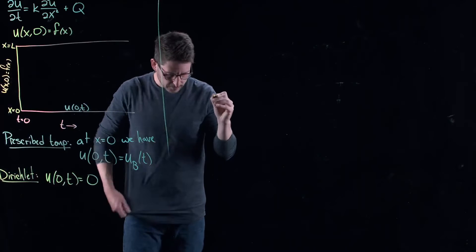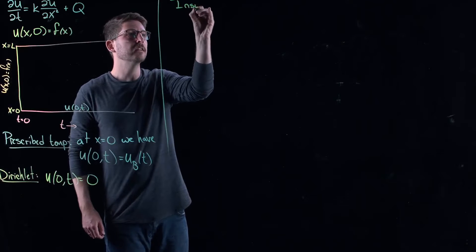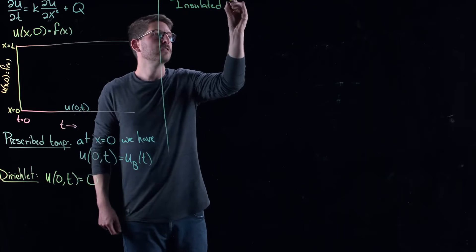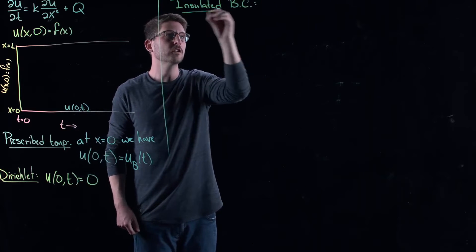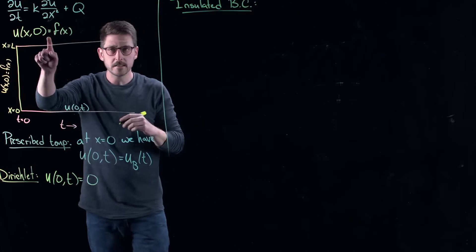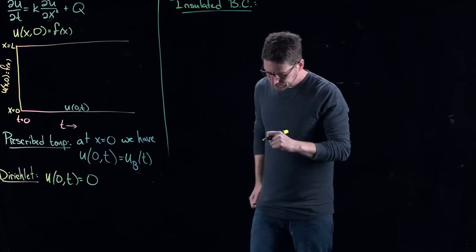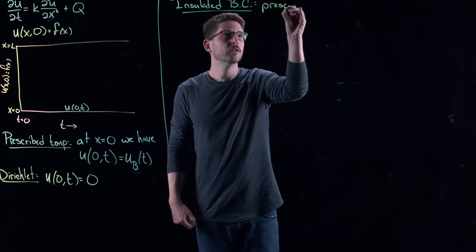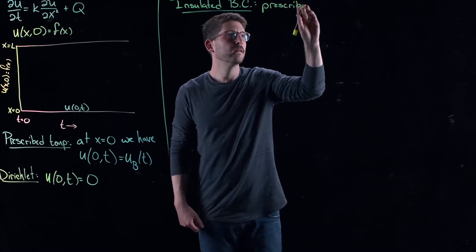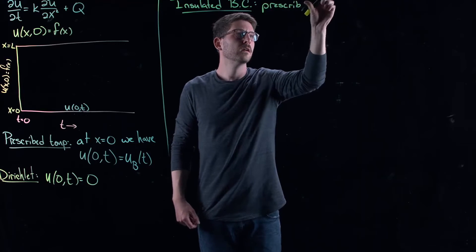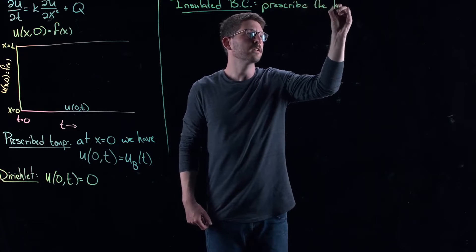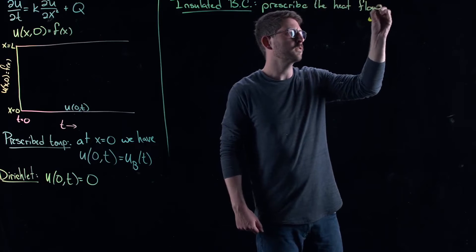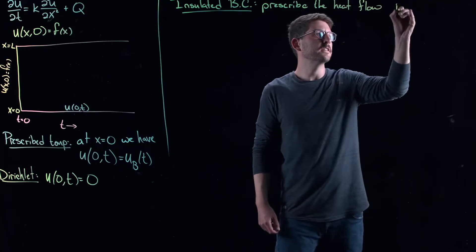That's not the only kind of boundary condition that we could have. We could also have another boundary condition called an insulated boundary condition. So I use BC for boundary condition, and IC for initial condition. You'll get used to it as we go through. But in this case, you prescribe the heat flux, or the heat flow, instead of the temperature.